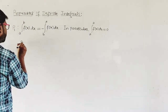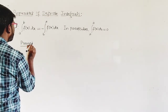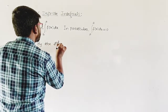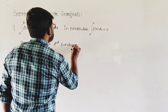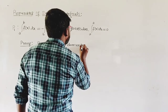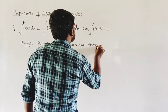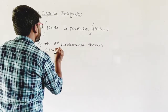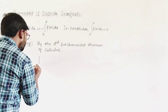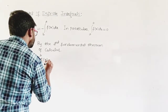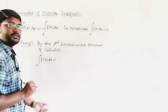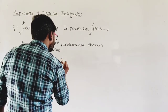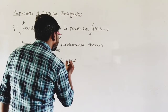Proof: By the second fundamental theorem of calculus, we can write integral a to b of f(x) dx equals F(b) minus F(a).